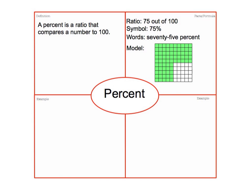Or you could do it as a model. You might remember this from first, second, third grade. Here we have a model of 75 squares being highlighted out of 100 in a 10 by 10 grid.